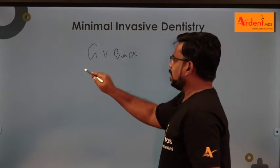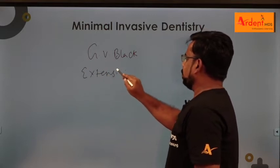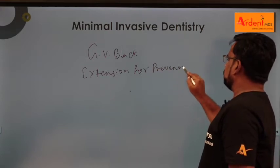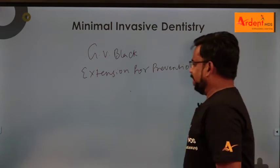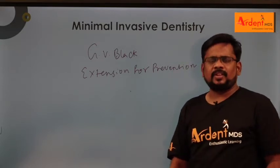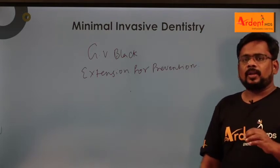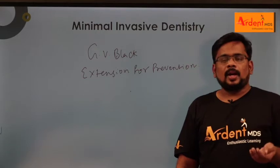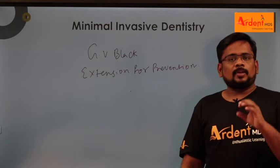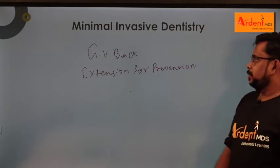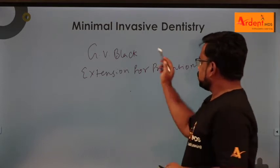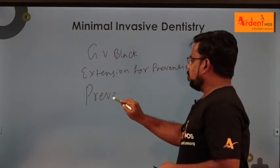Minimal invasive dentistry evolved from the old concept given by J.V. Black - extension for prevention. But now many patients don't prefer amalgam restoration with extension for prevention. Even if you remove caries of 1 mm, you have to give a depth of 1.5 mm for amalgam restoration, removing healthy tooth structure. Today's concept is to use materials like GIC or composite - prevention for extension.